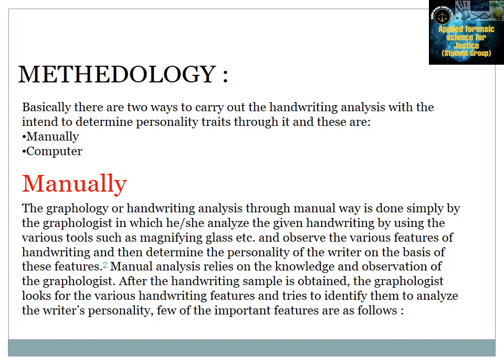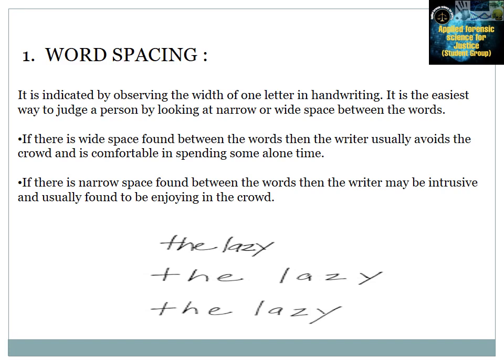Three of the key features are as follows. The first feature is word spacing. The word 'the lazy' is written in three different ways with different spaces between them. The space indicates how much we are attached to people. If there is wide space between words, the writer usually avoids crowds and is comfortable spending time alone. If there is narrow space between words, the writer may be interested in and enjoys being in a crowd.